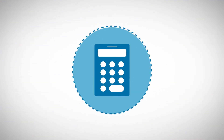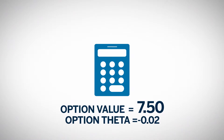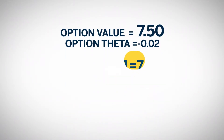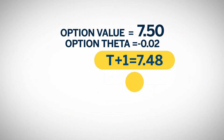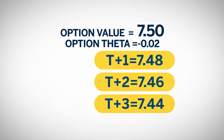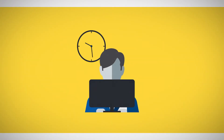For example, if the value of an option is $7.50 and the option has a theta of 0.02, after one day the option's value will be $7.48, two days $7.46, etc. In this prior example, the theta was a constant value of 0.02 for all three days.